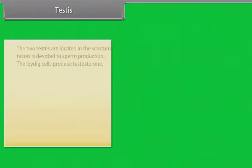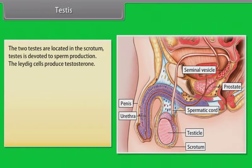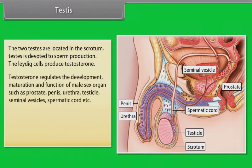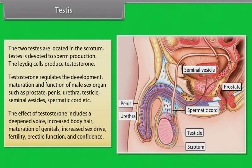The two testes are located in the scrotum and are devoted to sperm production. The Leydig cells produce testosterone. Testosterone regulates the development, maturation and function of male sex organs such as the prostate, penis, urethra, testicle, seminal vesicles, and spermatic cord. The effects of testosterone include a deepened voice, increased body hair, maturation of genitals, increased sex drive, fertility, erectile function and confidence.